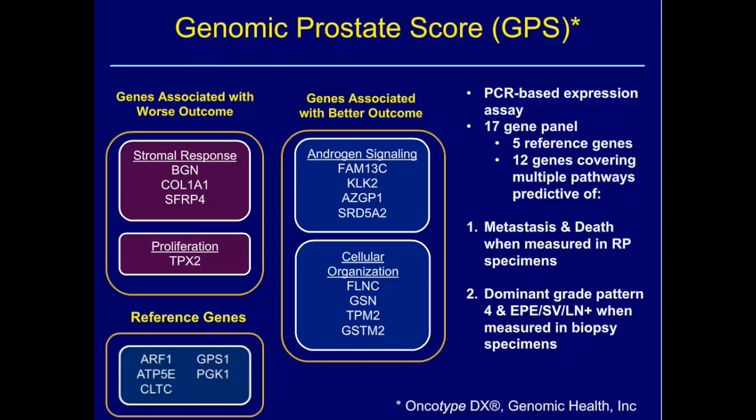When coupled with Gleason score and PSA, Prolaris showed improved discriminative ability to predict mortality. The prostatectomy data, published recently in a group of almost 600 patients, showed the Prolaris score was independently predictive of biochemical recurrence — you can see the hazard ratio per unit increase in Prolaris score — and also of metastasis-free survival. So combining the Prolaris test with standard pathology gives you more information than either one alone.